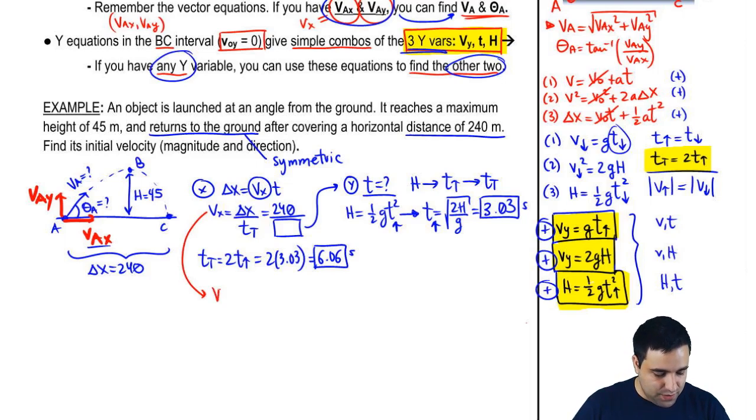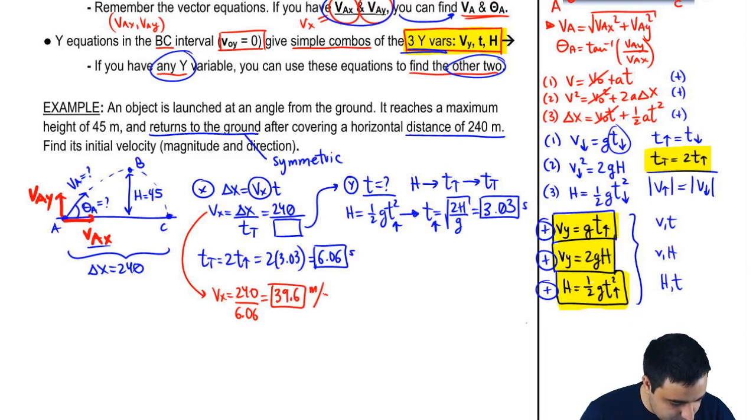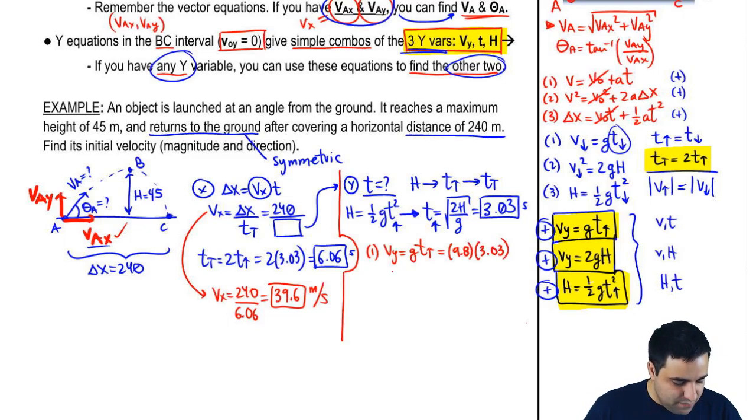So to find my velocity, to find my velocity, it's 240 divided by 6.06. And if you plug in these numbers carefully, you get 39.6 meters per second. So I found VX. Now I just have to find VY. VY obviously sits in the Y-axis. So I'm going to use one of these three simplified equations. And to find V, I can use either the first or the second. I'm just going to use the first one here. So VY equals G time up. So G is 9.8. The time up is 3.03. And VY, therefore, is 29.7.